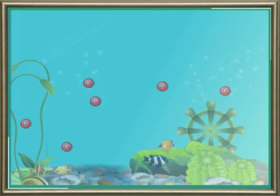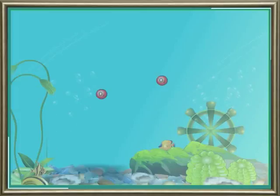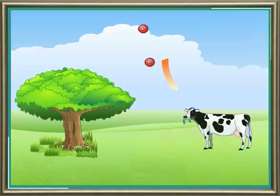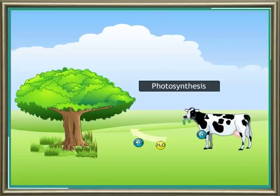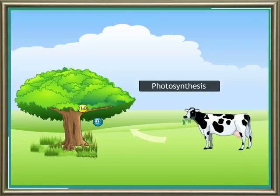Oxygen is present both in air and water, and the amount of oxygen in air and water is maintained in equilibrium. Aquatic animals procure oxygen directly from water, while terrestrial animals procure oxygen from air. The by-products of respiration — carbon dioxide and water — are utilized for photosynthesis.